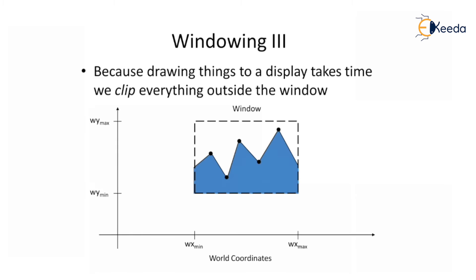Because drawing things to display takes time, we clip everything outside the window. Clipping is done outside the window; inside the window the geometry is retained, while outside the window the geometry is clipped — that means it is removed.